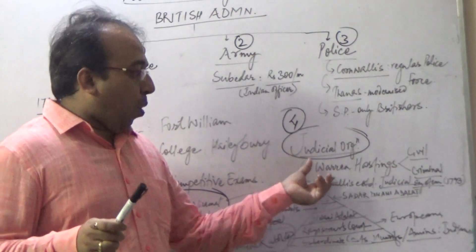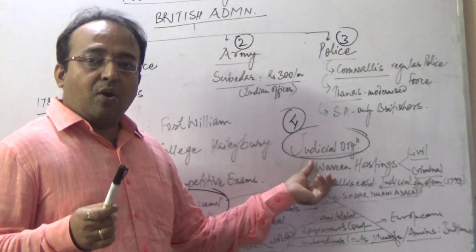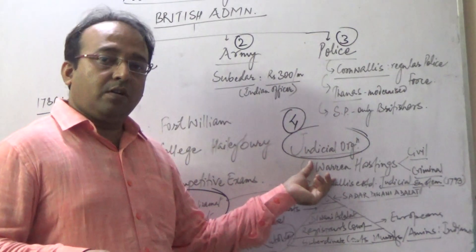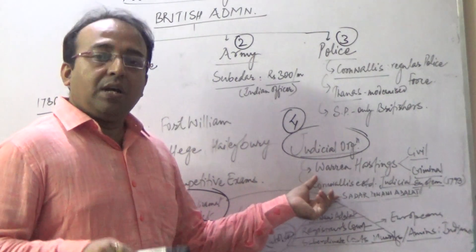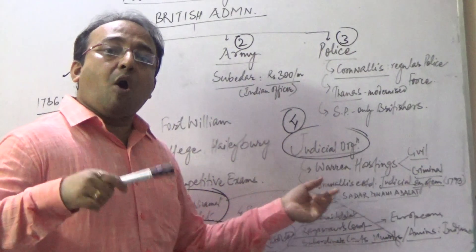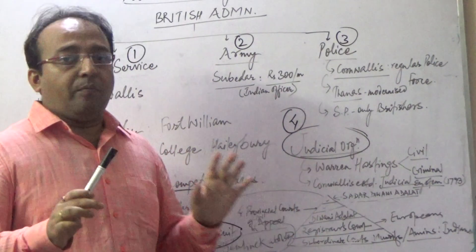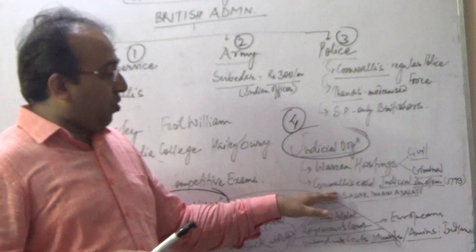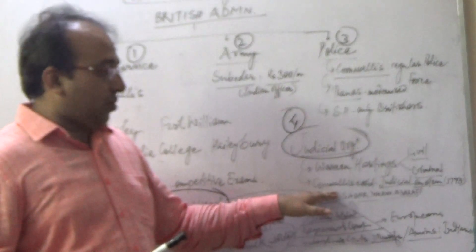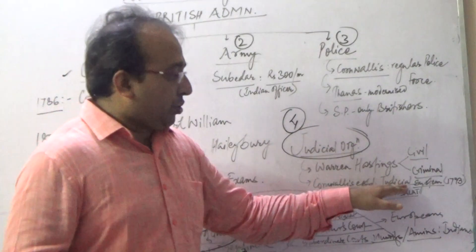Warren Hastings had already made the background for Cornwallis to give the judicial system an organized form. That was the role of Cornwallis. So Cornwallis established the judicial system in an organized manner, that was his contribution.